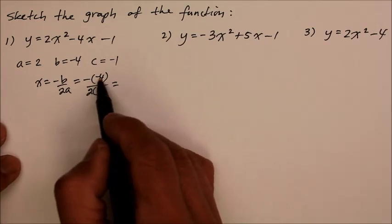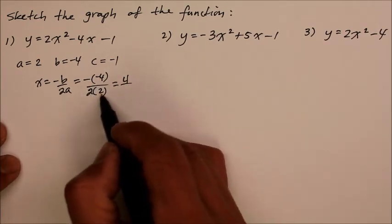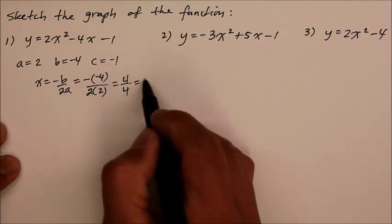And when we evaluate, negative times negative 4 is positive 4, over 2 times 2 which is 4, the x value becomes 1.